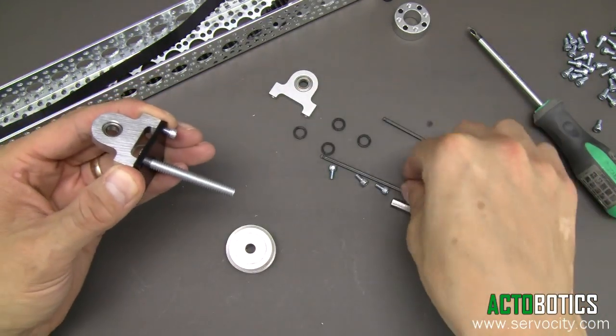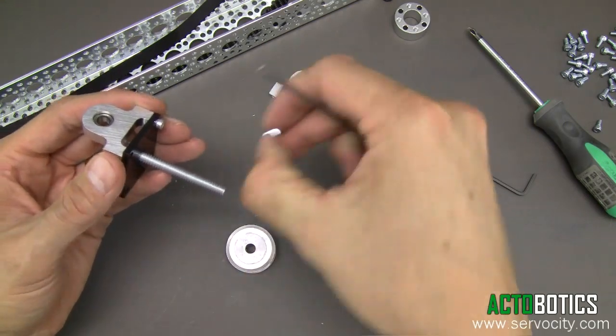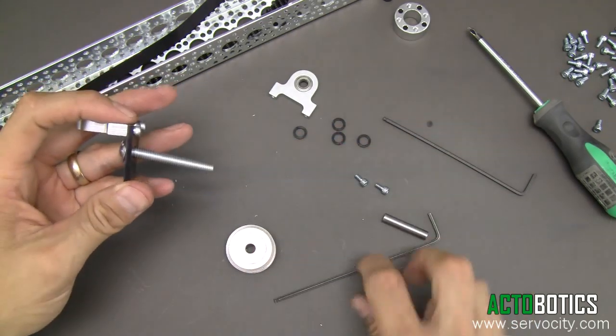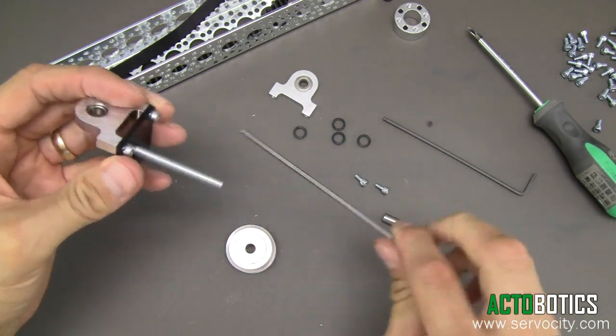Let's go ahead and tighten in our 6-32 quarter inch length socket head cap screws. I'm going to tighten that up. There we go.